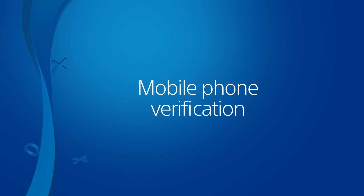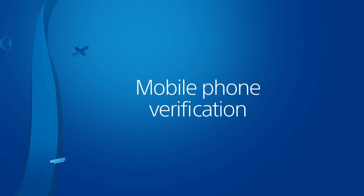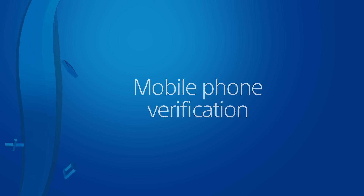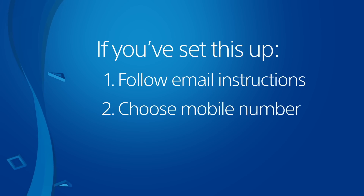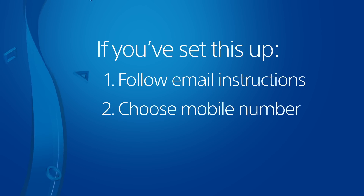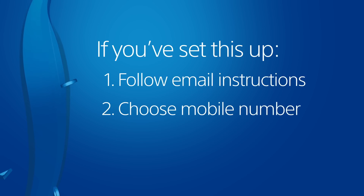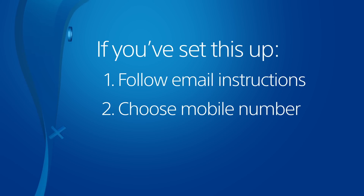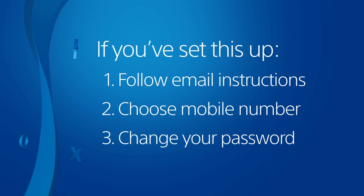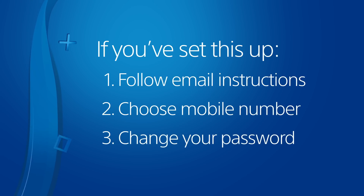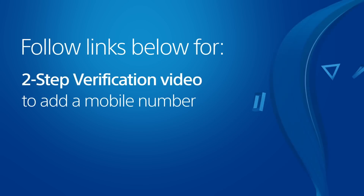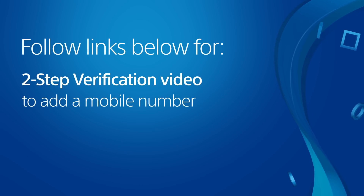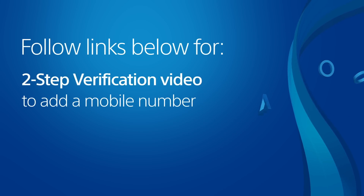If you have a mobile phone number associated with your account, it can be used as a third option for resetting your password. Choose Mobile Phone after replying to a password reset email. Follow the instructions to confirm your identity and then change your password. If there's no mobile number associated with your account, check out the two-step verification link below this video to learn how to add one.